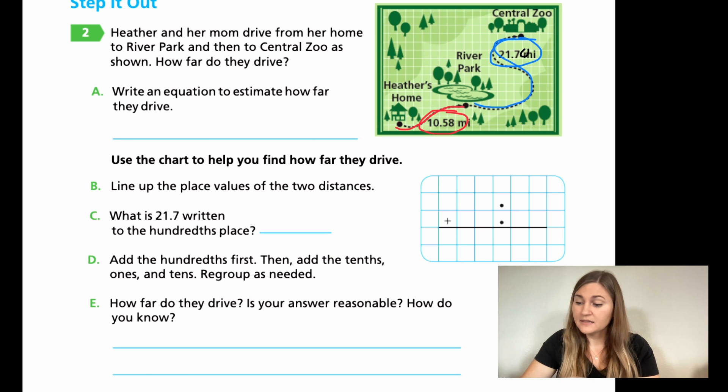Then do the same thing that we just did on the last page. Use that chart. Line up the decimals. What is 21.7 written to the hundredths place? Add the hundredths, then the tenths, then the ones, then the tens. Regroup if you need to, just like normal adding. And then answer it. How far did they drive? And how do you know? Go ahead and try these couple problems. And then we'll come back and solve them together. Hit pause here.